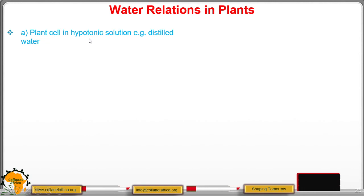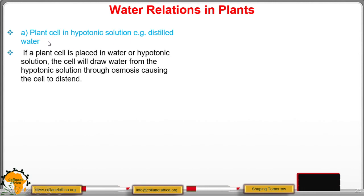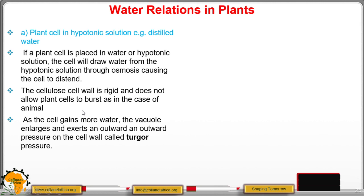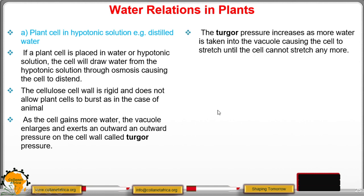So what will happen if a plant cell is placed in a hypotonic solution such as distilled water? The cell will draw water from the hypotonic solution through osmosis, causing it to enlarge. The cell wall is rigid and firm and does not allow plant cells to burst, as in the case of animal cells. As the cell gains more water, the vacuole enlarges and exerts an outward pressure on the cell wall. That outward pressure being exerted on the cell wall as the cell gains more water is called turgor pressure, and this turgor pressure increases as more water is taken into the vacuole.